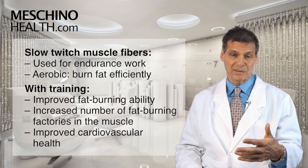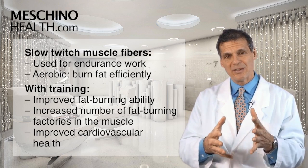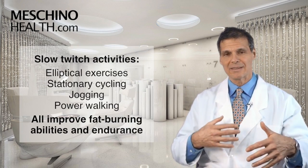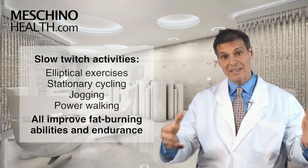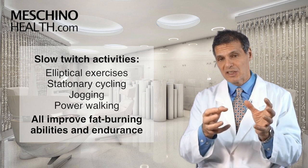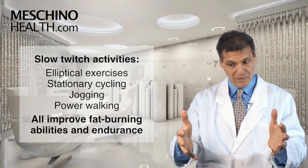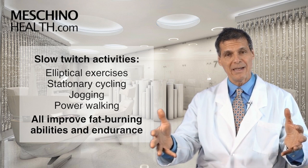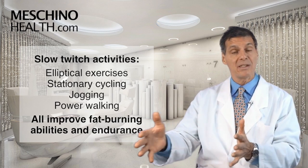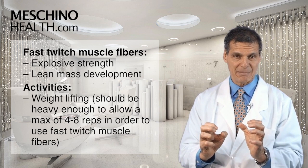You also improve your endurance fitness. When you do endurance exercise with your slow twitch muscle fibers, you improve your cardiovascular health. People who do the elliptical machine, stationary cycling, jogging, or power walking are primarily using the type 1 slow twitch muscle fiber, which is very aerobic. It will create more fat-burning adaptations the more you do it, and you become pretty good at endurance. But it doesn't give you explosive strength and power or lots of lean mass development.